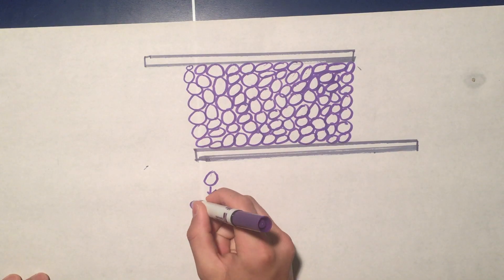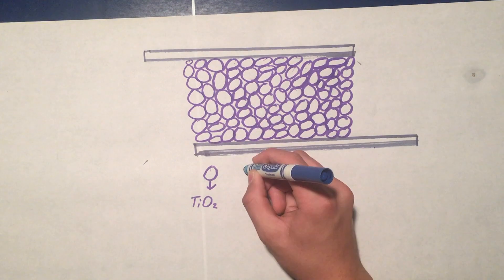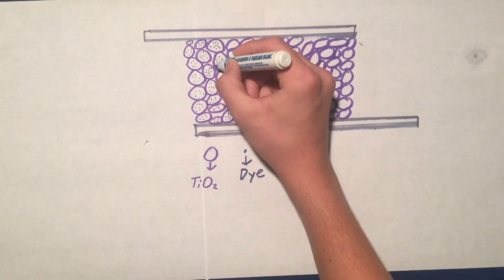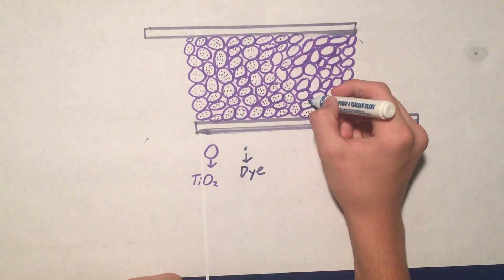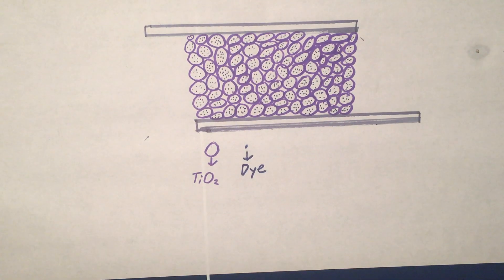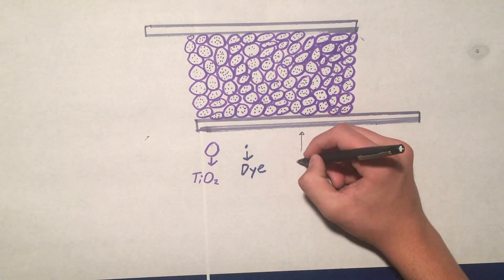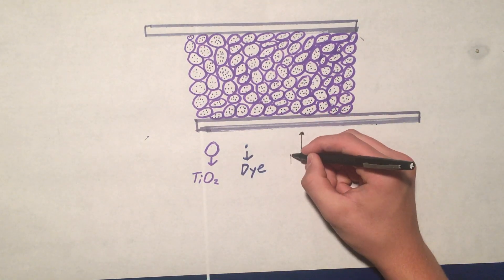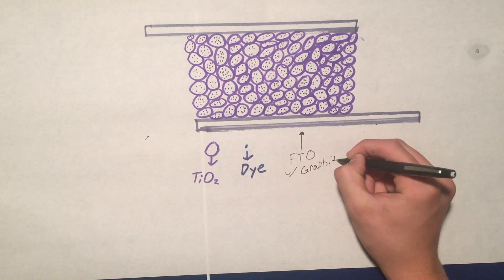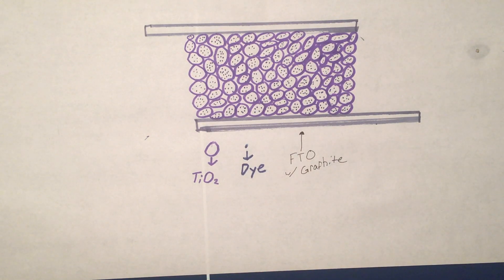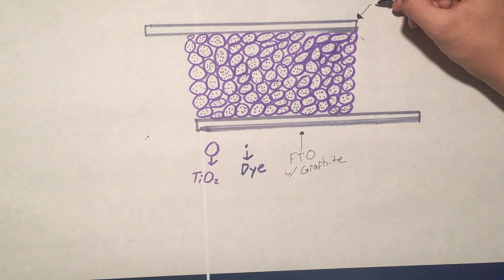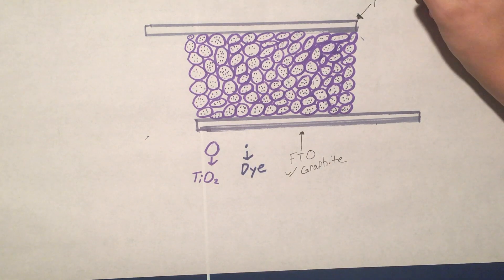Dye-sensitized solar cells use titanium dioxide particles as a semiconductor layer, shown in purple. Photo-absorbent dye is bonded to these particles, represented by the blue dots. This layer is between two transparent fluorine-doped tin oxide glass layers, with the top serving as the anode and the bottom serving as the cathode. The cathode layer has graphite on its surface.